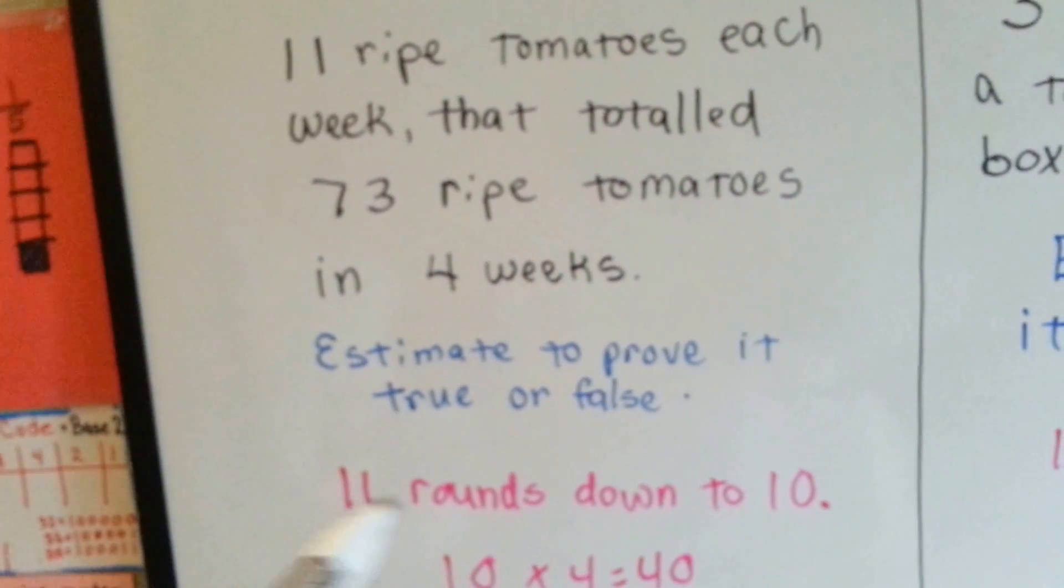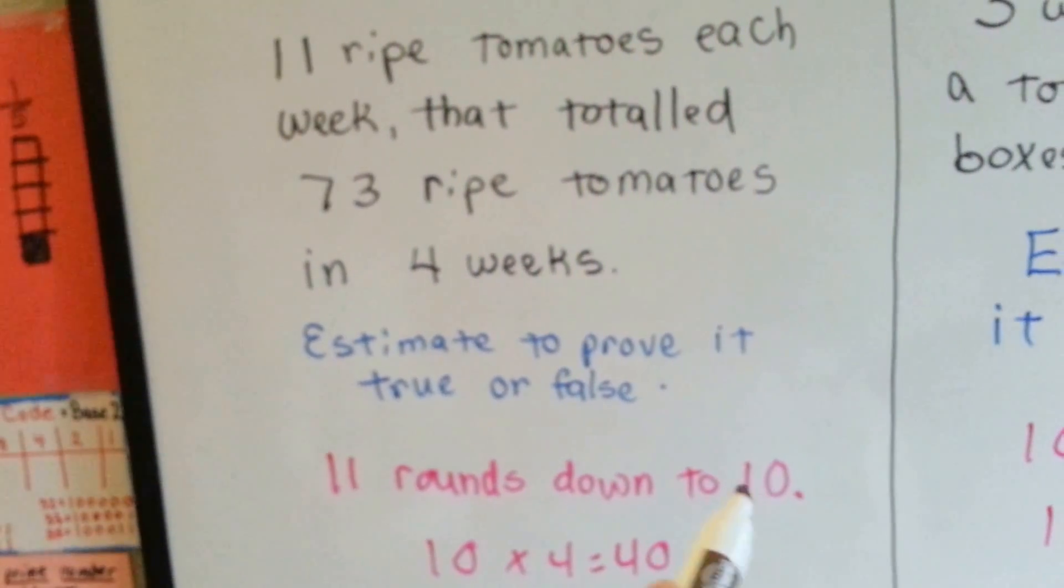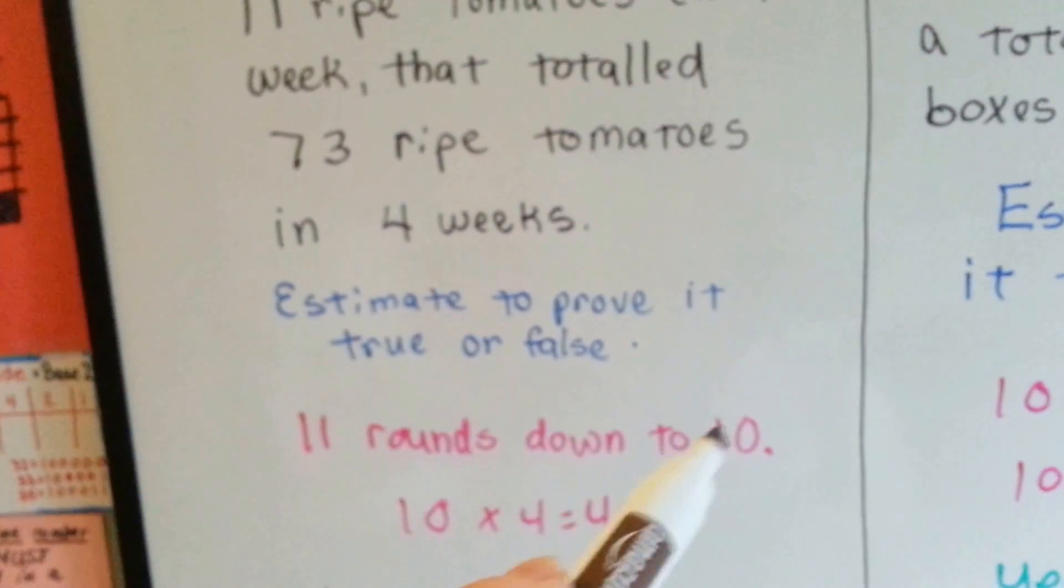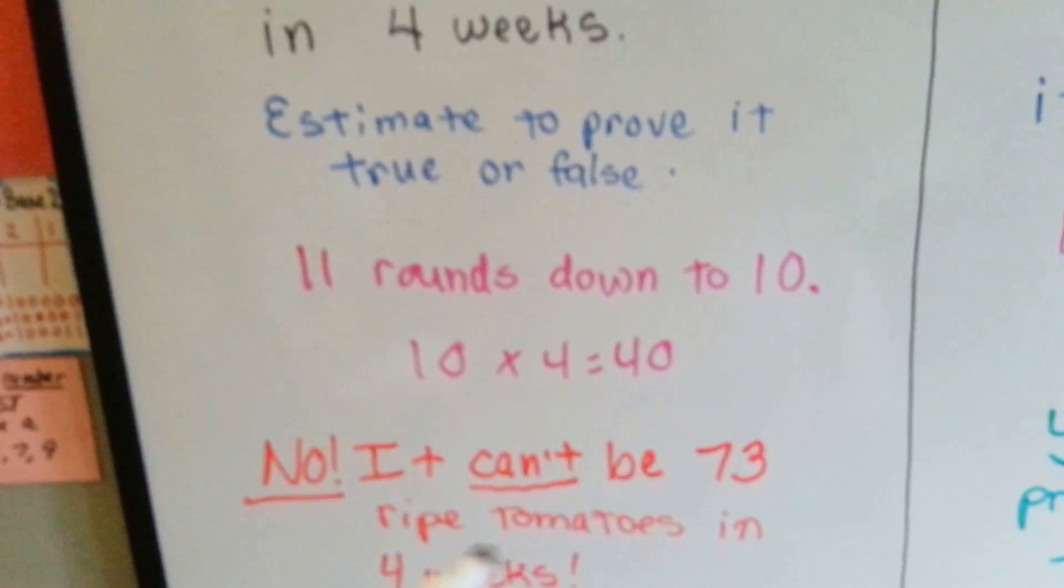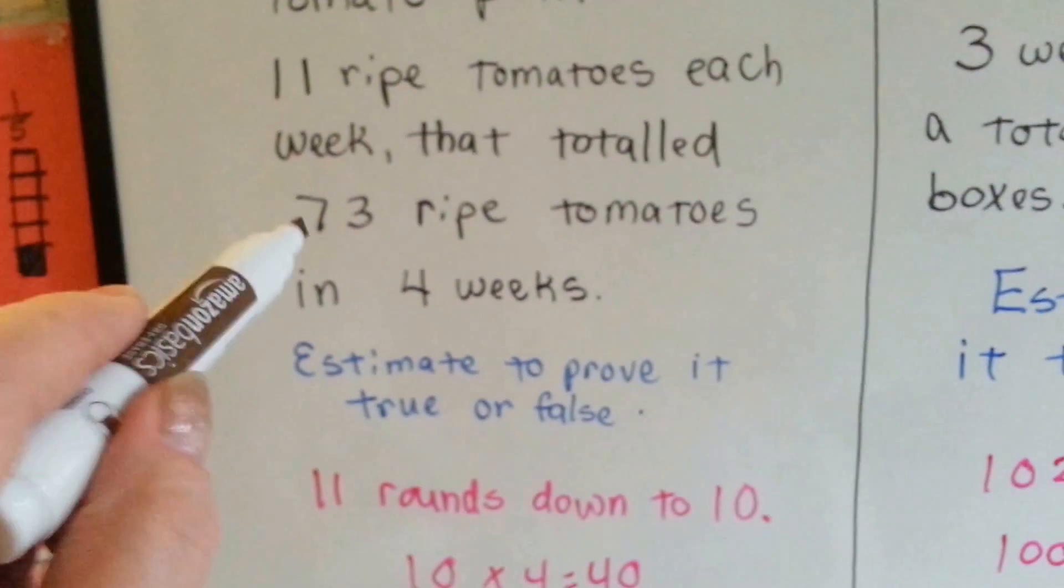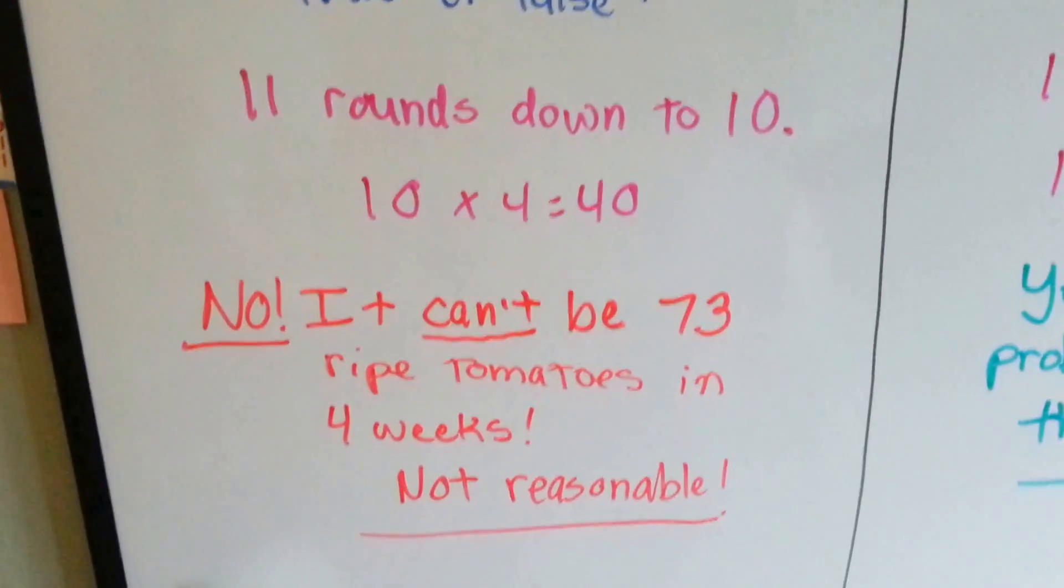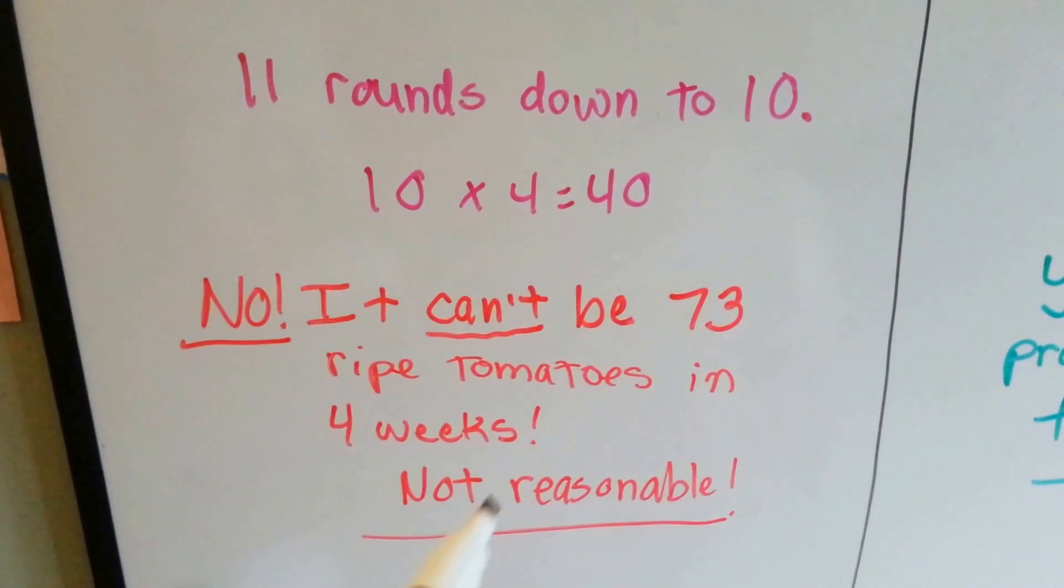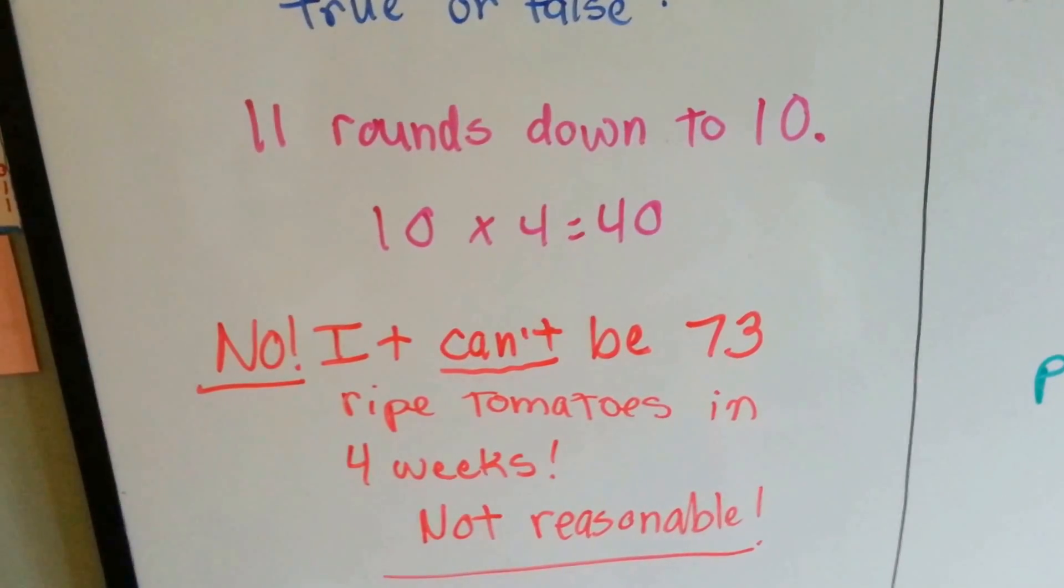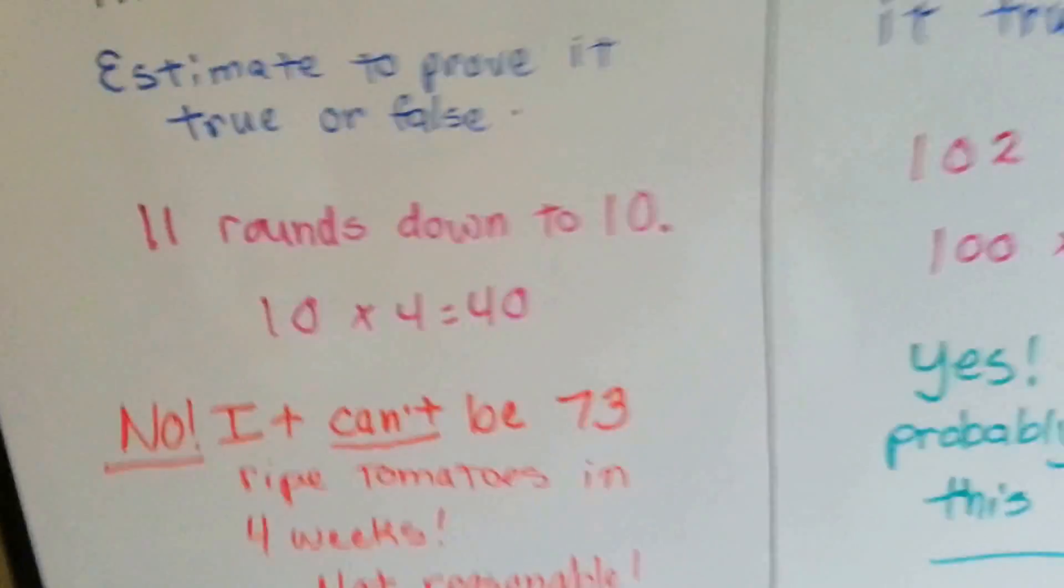Well, 11 rounds down to 10. And if you multiply 10 times the 4 weeks, 10 times 4 is 40. So no, it can't be 73 ripe tomatoes in 4 weeks. That doesn't make sense. It's not logical. It's not reasonable. See how we rounded the 11 to 10 so we could do fast multiplication? That's what we're doing here.